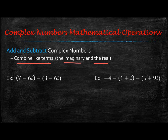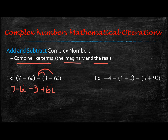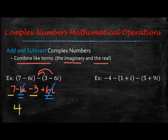In this first example we have 7 minus 6i, and we're going to subtract the complex number 3 minus 6i. Treat this just like a normal expression with a variable. First, distribute that negative through, so you have 7 minus 6i, then minus 3, then plus 6i. Look for like terms: 7 minus 3 gives you 4, and negative 6i plus 6i cancels, so your final answer is just 4.